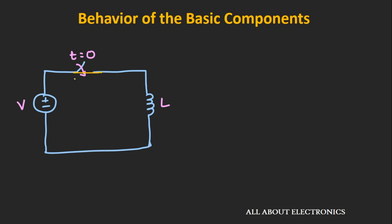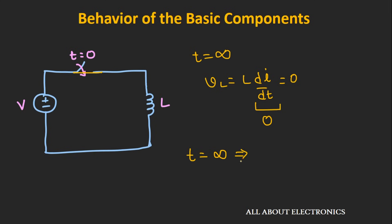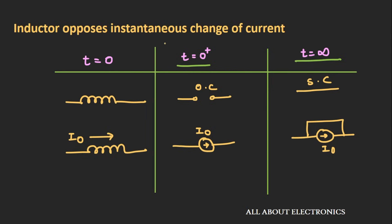In summary: the inductor opposes instantaneous change of current. At T=0+, if no current was flowing, the inductor acts as an open circuit. At steady state (T=∞), it acts as a short circuit. If a current I0 was flowing continuously at T=0, then at T=0+ the inductor acts as a current source of value I0, and again at T=∞ it acts as a short circuit.